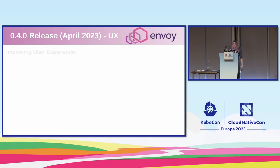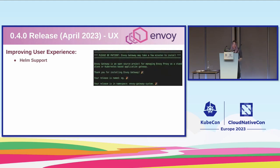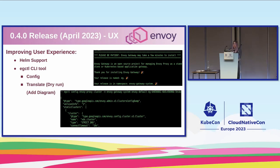Quick updates about our 0.4.0 release that's coming. We've already cut the RC last week and I'll be cutting the final release when I get home from KubeCon on Friday. The main things we wanted to prioritize for 0.4.0 are user experience. We added Helm support since it is broadly adopted by the cloud-native community, and that should help people manage their installations much more easily. We also added a new EGCTL CLI tool with two primary features. One is that you can pull config from your managed Envoy proxies and check things like all your XDS clusters — you can dump the entire config. The other is a translation command, which lets you provide Gateway API config and see what XDS resources Envoy Gateway would create from it, and also lets you validate that Gateway API config before you even apply it to Kubernetes.